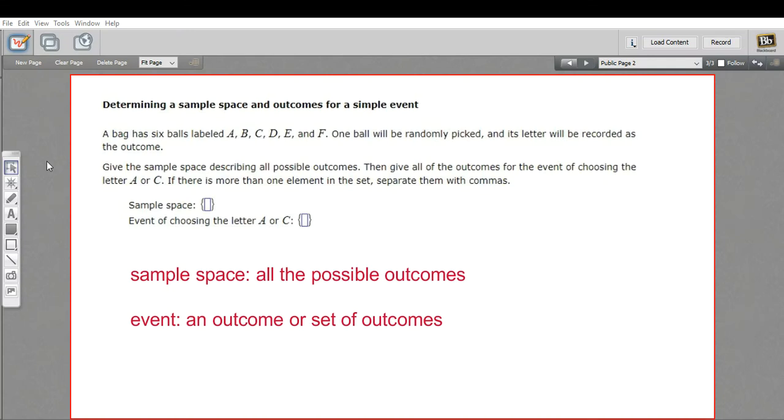In this problem, we're being asked to determine a sample space and an outcome for an event. These are terms from probability. Sample space means all of the possible outcomes.